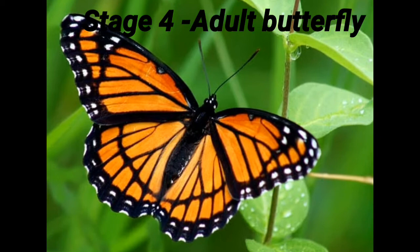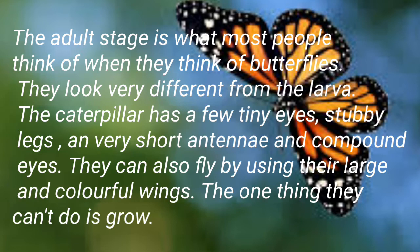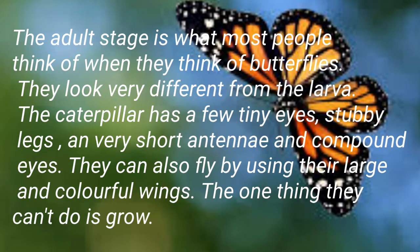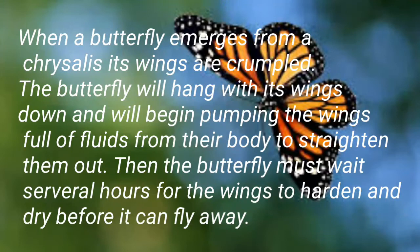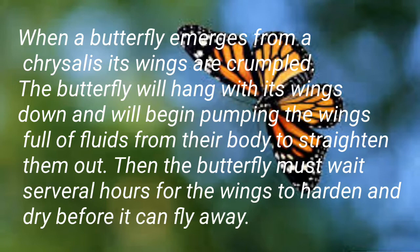Stage 4: Adult. When the time comes, the pupa changes into a butterfly and leaves the cocoon. The adult stage is what most people think of when they think of butterflies — they look very different from the larvae. The caterpillars had few tiny stubby legs, very short antennae, and compound eyes, whereas adults can fly using large and colorful wings. The one thing adults cannot do is grow. When a butterfly emerges from the chrysalis, its wings are crumpled. The butterfly will hang with its wings down and begin pumping them full of fluids from its body to straighten them, then stretch for several hours for the wings to harden and dry before it can fly away.